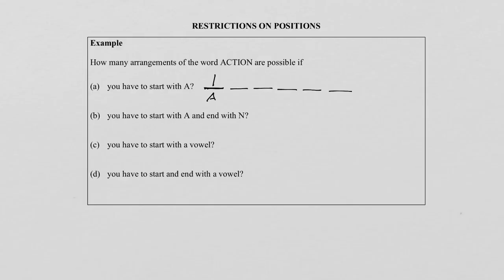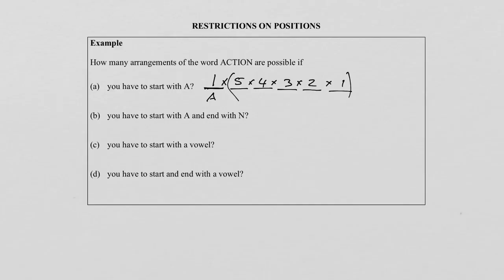If we look at the second position, because the letters cannot repeat, there will be five of them left. And then there will be four, three, two, and one. According to the Counting Principle, we multiply this to get the number of arrangements. You will notice that the leading one doesn't make a difference to our answer because we multiply. So if we look at five down to one, this gives us five factorial, and the answer is 120 when you solve that.